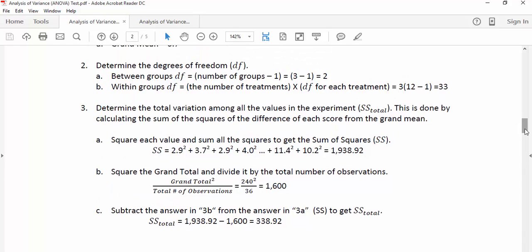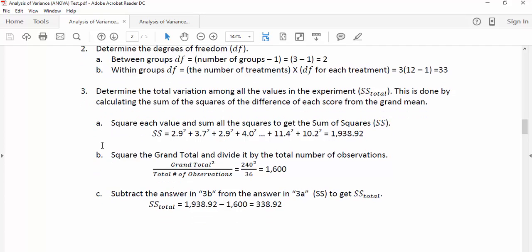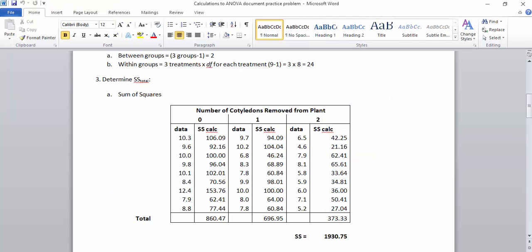Now we have to determine this value called the sum of squares total, and we can do this in three steps. The first step is to square each value of each of those measurements that were collected, and then take the sum of all of those, and that gives us our sum of squares. So in this table here, I have each of the values for the zero cotyledon group, one cotyledon group, and two cotyledon group, and all I've done is squared them. And here's my SS, is 1,930.75.